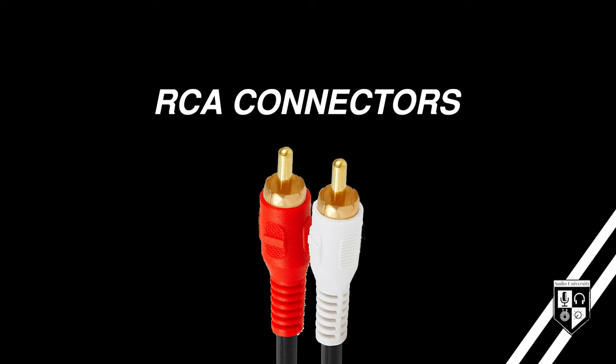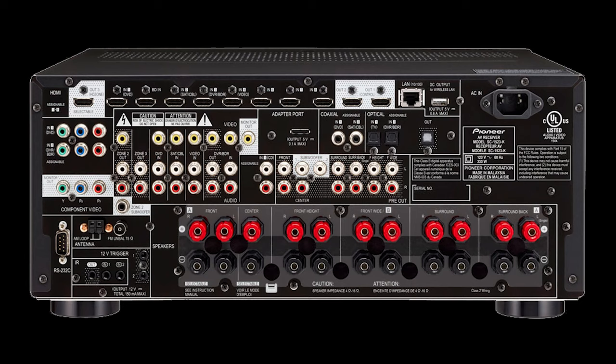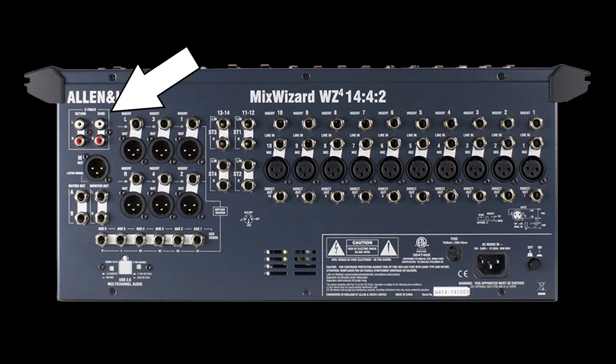Let's move on to RCA connectors. Although RCA connectors are most commonly used in consumer audio, you will sometimes encounter them in professional audio. RCA connectors contain a pin and a sleeve, and they're usually paired together in sets of a white and red connector for the left and right signal, allowing them to carry stereo unbalanced signals. RCAs are most often found in consumer audio and home theater equipment, but you will occasionally see them in an audio mixer. Be aware that there are different voltage level standards for consumer and professional equipment.